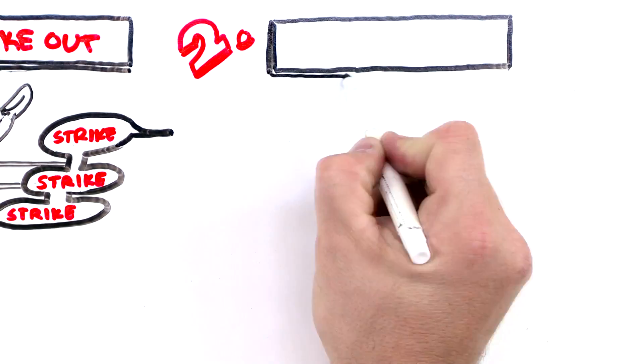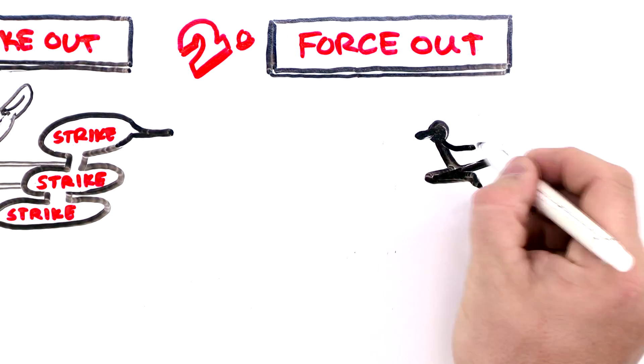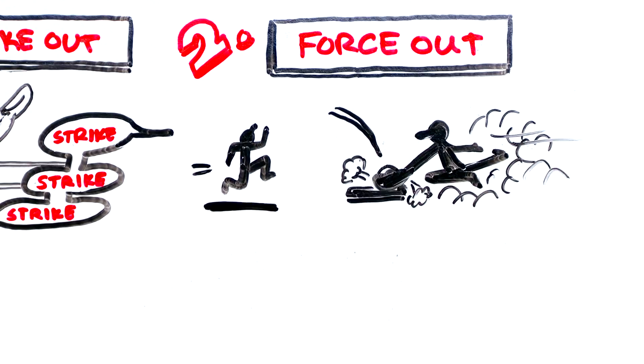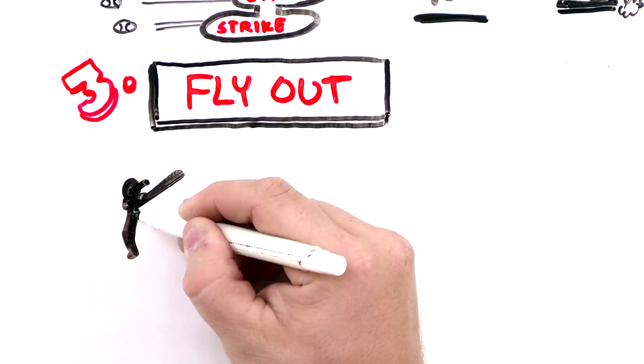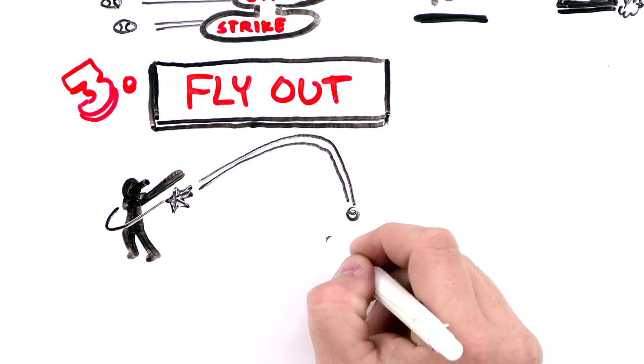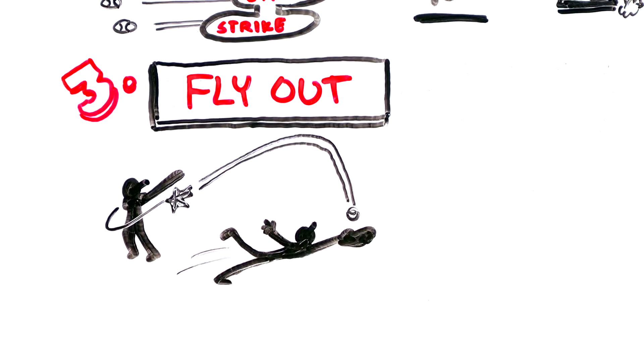Then there's a force out when the ball is hit and the defense player gets the ball and reaches a base before the runner. Then there are fly outs when a player hits the ball in the air and it's caught by a defensive player before the ball hits the ground.